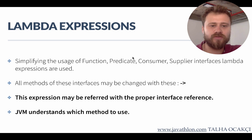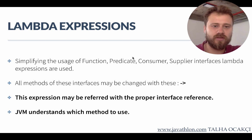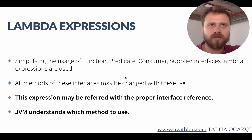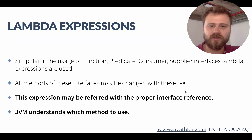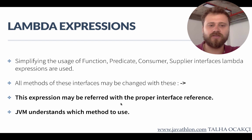All methods of these interfaces have an abstract method in each functional interface. For instance, it is 'apply' on function or 'test' in predicate. We will remove all the boilerplate code around the function and replace them with this arrow expression, called a lambda expression. This expression may be referred to with a proper interface reference.